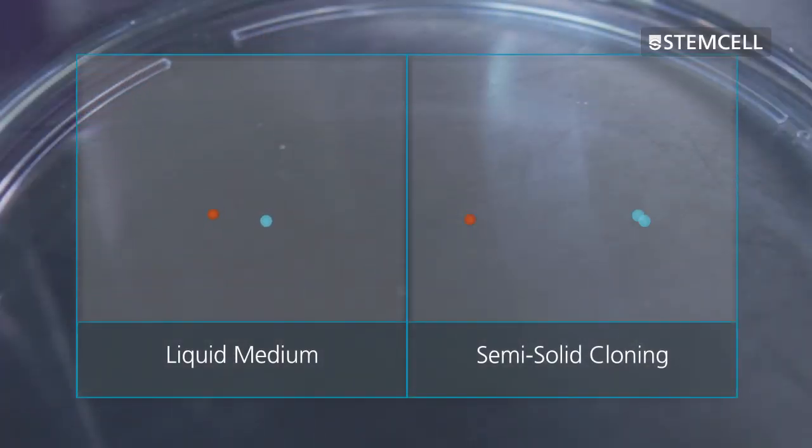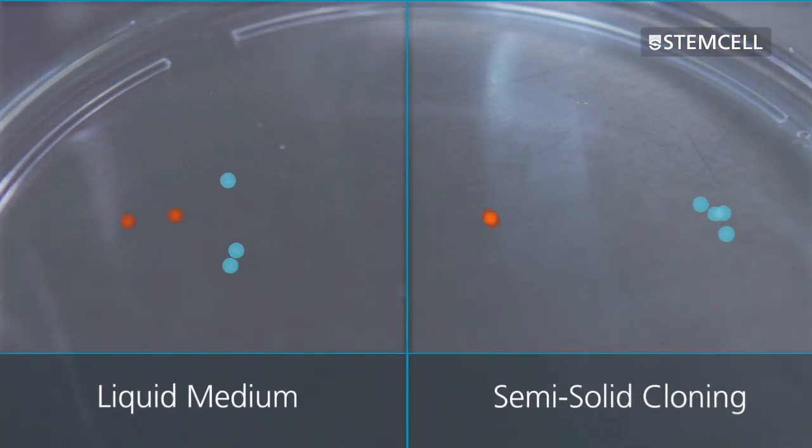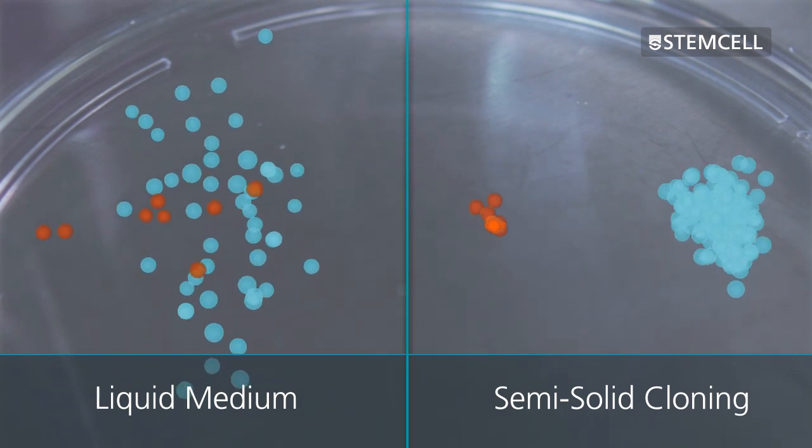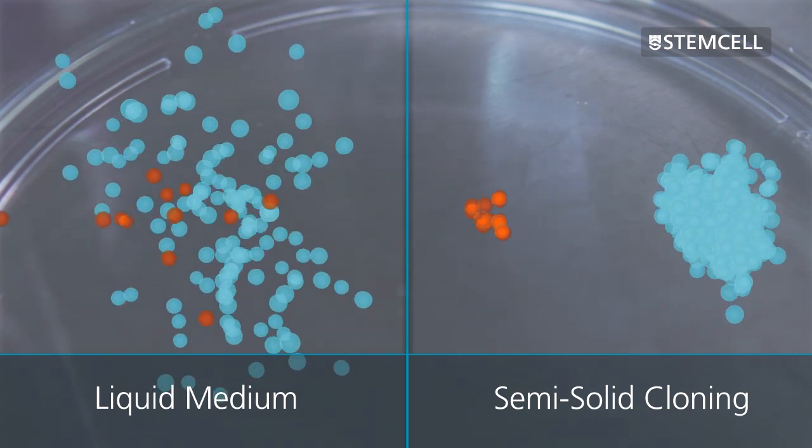Additionally, semi-solid cloning makes it easy to isolate a large number of highly diverse clones. This is in contrast to methods that involve selection in liquid media, where cultures can quickly become dominated by fast-growing cells, leading to the loss of slow-growing and potentially high-producing clones.